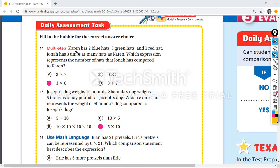If we take a look at this one, this is Karen has two blue hats, three green hats, and one red hat. Jonathan has three times as many hats as Karen, which expression represents the number of hats that Jonah has compared to Karen.